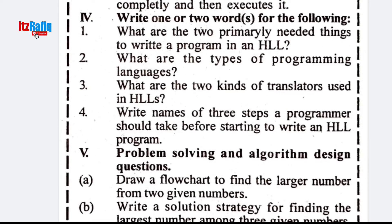Write one or two words: What are the two primary things needed to write a program in HLL? Logic and syntax. What are the types of programming language? Machine language, assembly language, and high-level language. What are the two kinds of translators in high-level language? Interpreter and compiler.